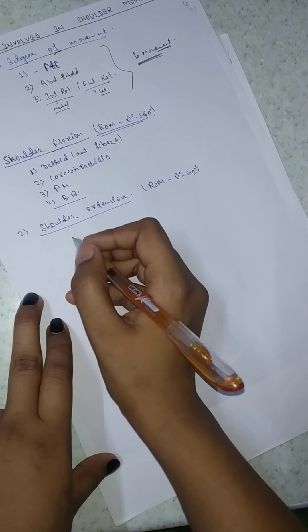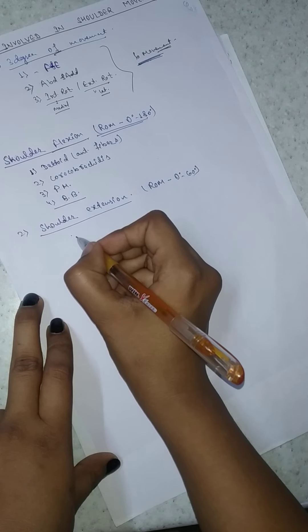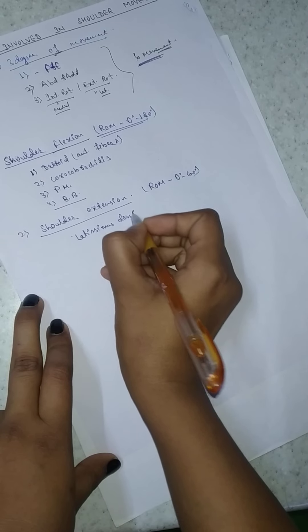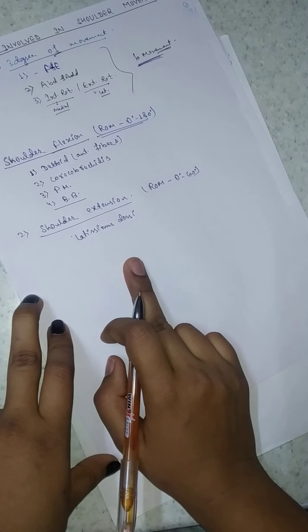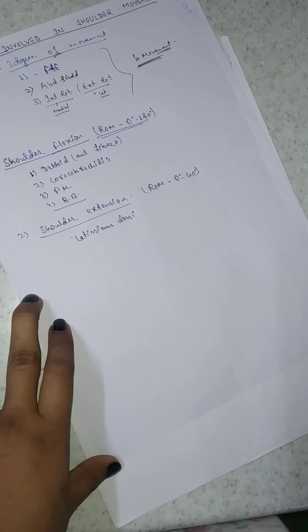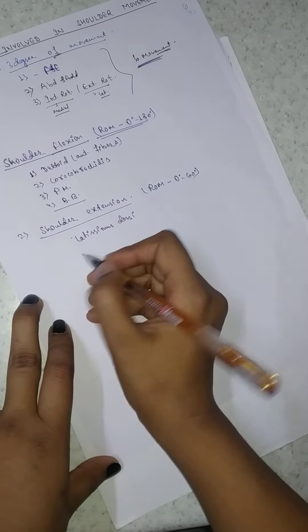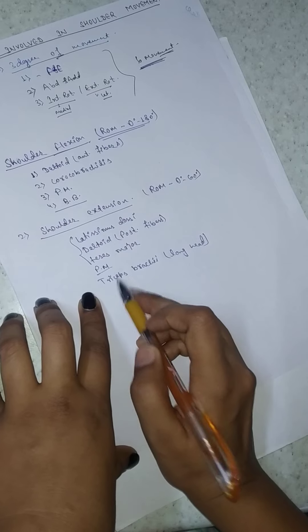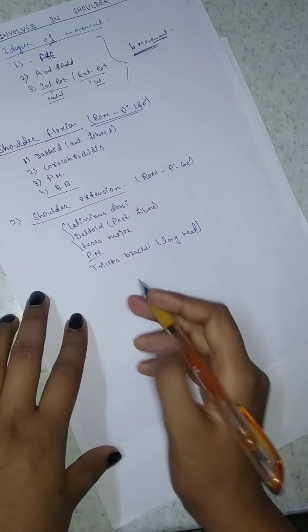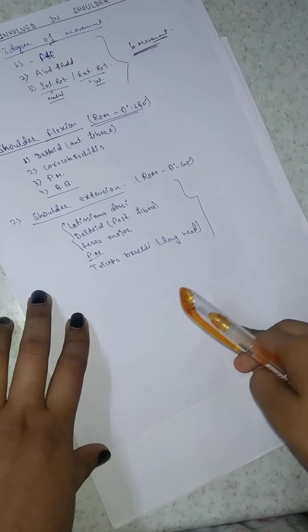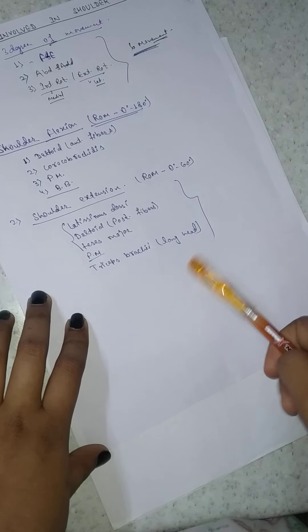Now we are going to study about extensors. There are three main muscles: the first is latissimus dorsi, the second is teres major, and the third is the deltoid posterior fiber. The deltoid muscle has three fibers — anterior, posterior, and middle. The posterior fiber helps with posterior movement, the anterior fiber helps with anterior movement, and the middle fiber helps with abduction and adduction. Additional muscles are pectoralis major and triceps brachii. All these muscles are present at the posterior side of the arm and help in the extension of the shoulder.